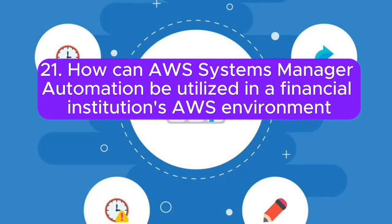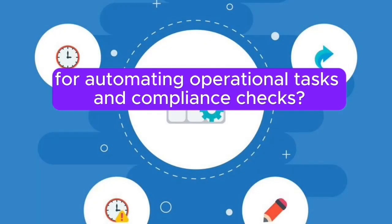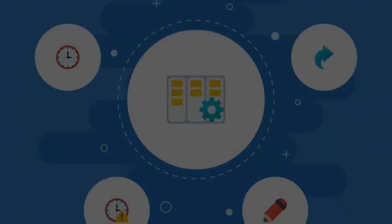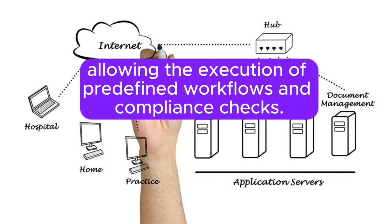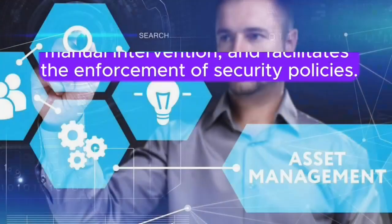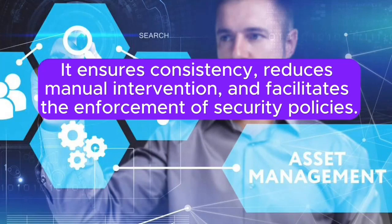Question 21: How can AWS Systems Manager Automation be utilized in a financial institution's AWS environment for automating operational tasks and compliance checks? Answer: AWS Systems Manager Automation automates operational tasks in financial institutions, allowing the execution of pre-defined workflows and compliance checks. It ensures consistency, reduces manual intervention, and facilitates the enforcement of security policies.